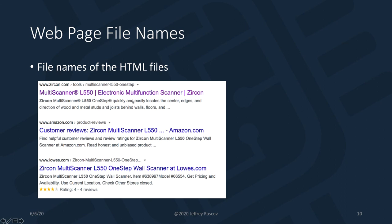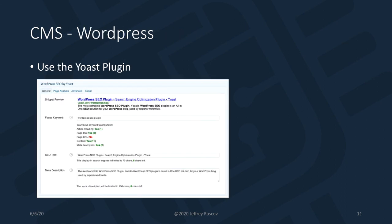The file names should all match — the file name, the title, and the description. If you're using a content management system like WordPress, there is a plug-in, which is software you include in your CMS, that allows you to write the title tag, description, and file name all in one place. These can all be saved for organic search. These are the important things you can use to rank your website in Google organic search. Look for my next lesson on how to write better content for your page.